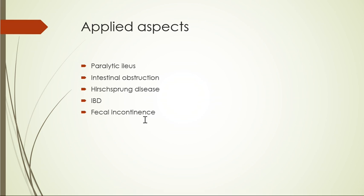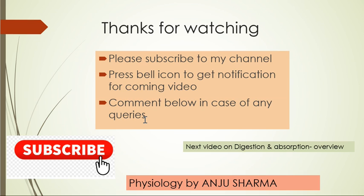So that covers intestinal motility and the enteric nervous system: why it occurs, how it occurs, what controls it, and what can happen when it is affected. Thanks for watching — feel free to comment below.